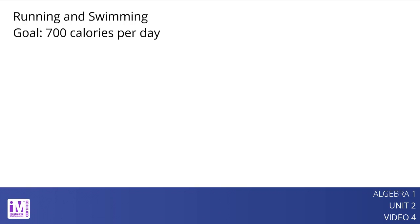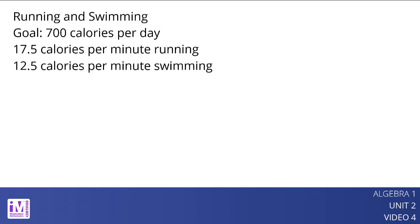Suppose an athlete wishes to burn 700 calories a day by running and swimming. He burns 17.5 calories per minute of running and 12.5 calories per minute of freestyle swimming. Let x represent the number of minutes of running and y the number of minutes of swimming. To represent the combination of running and swimming that would allow him to burn 700 calories, we can write the equation 17.5x plus 12.5y equals 700.